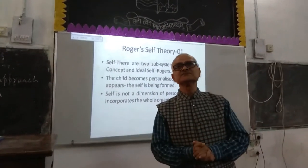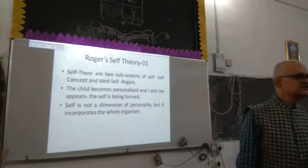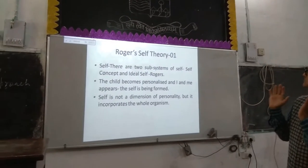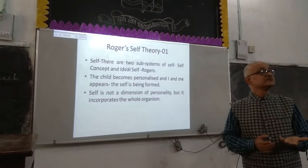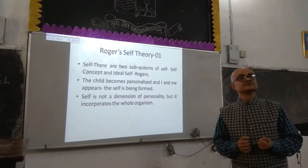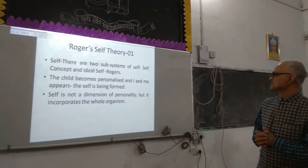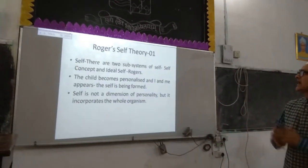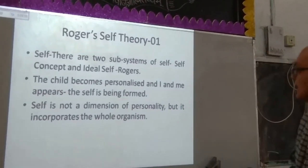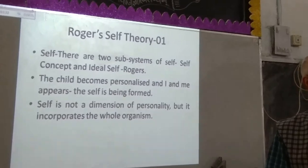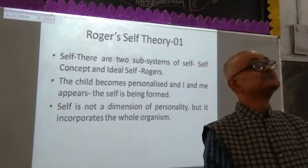The ideal self may be someone like Vivekananda, some other personality, or even a teacher, your father, or any person around you. You have a concept about yourself — that is your self-concept. Whom you consider to be ideal is the ideal image. The child becomes personalized, and I and me appears — the self is being formed when an individual becomes personalized and the concept of I and me emerges.